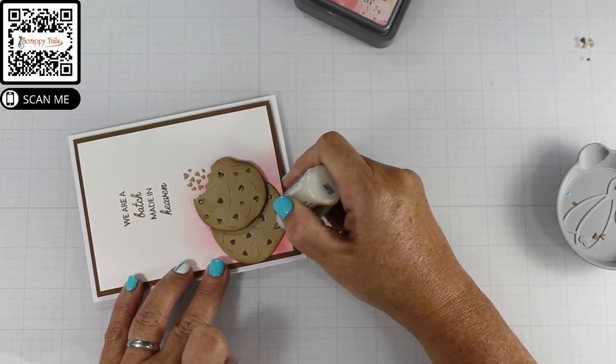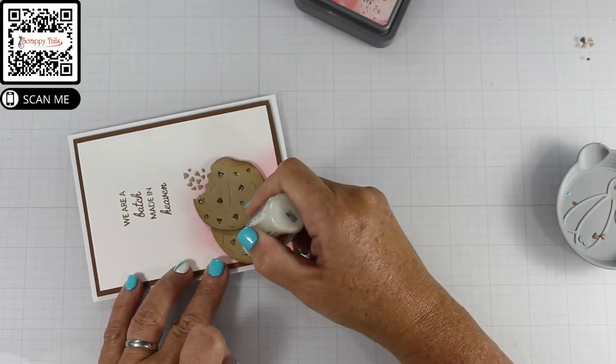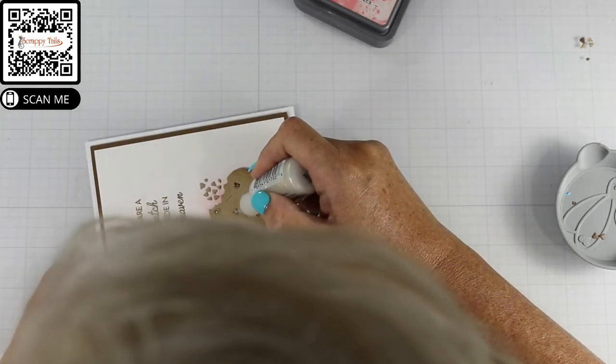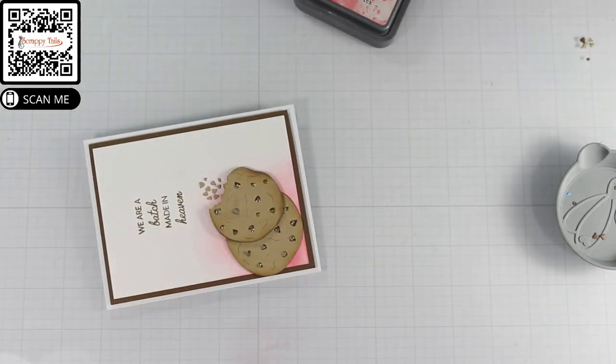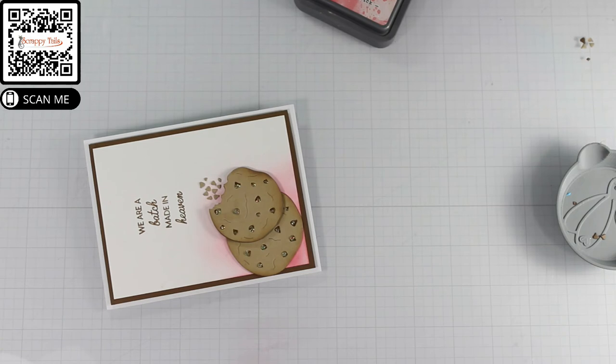So to finish off my card, I am using some diamond stickles and I am putting that over the chocolate chips and I chose the diamond because it has a lot of holographic specs in it, but it dries clear. So right now it looks kind of cloudy, but you'll notice in the pictures, all you're going to get is the illusion of all of the sparkle from the glitter, but none of the cloudiness.